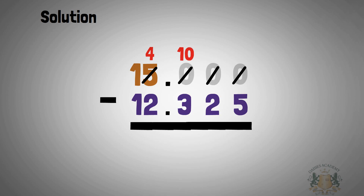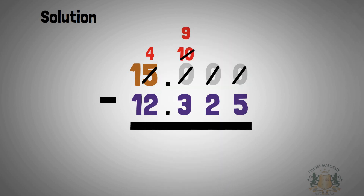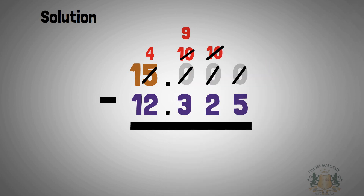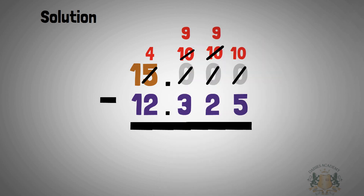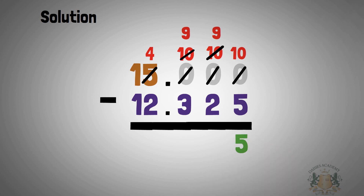When you borrow from five, five becomes four, and this zero on top of it will now become ten. Now you need to borrow again — one from ten. When you borrow one from ten, you have nine. This place will now become ten. You need to borrow again to the next place; when you borrow one, this will become ten and the previous place will now become nine.